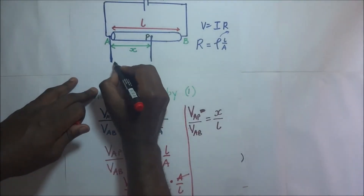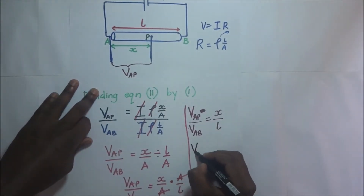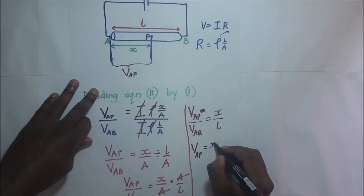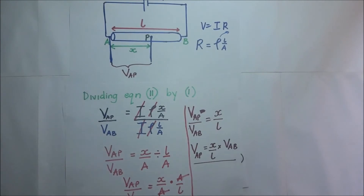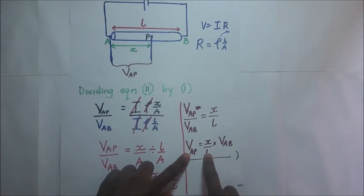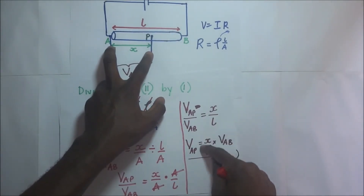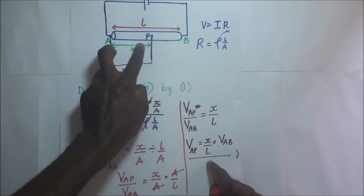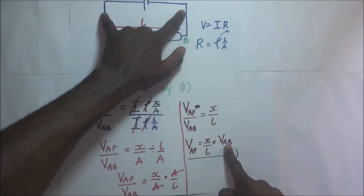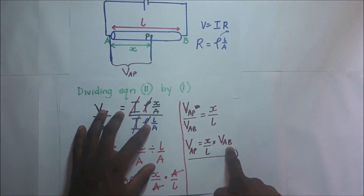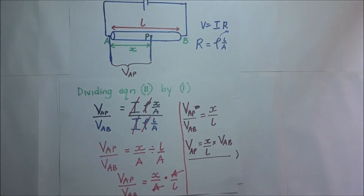Now if we are interested in finding the potential difference across the portion of this wire, V_AP, we make V_AB the subject of the formula. V_AP is going to be equal to X over L multiplied by V_AB. This expression shows us that X over L is the fraction of the whole wire — AP is a fraction of the whole wire — multiplied by the potential difference across the entire wire, which is the EMF. The potential difference across a section of the wire is always proportional to the length of that section.